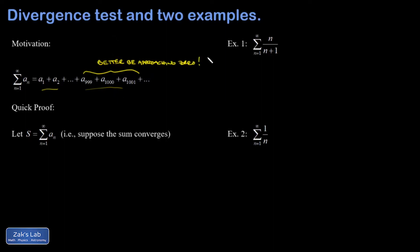So I could say the a_k's or the a_n's better be approaching zero as k or n approaches infinity. There's a quick proof of this that I thought was worth including.